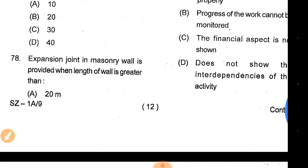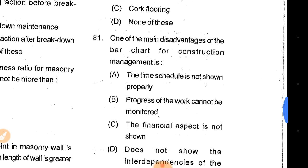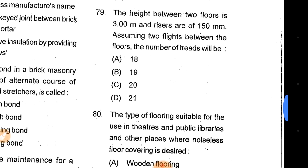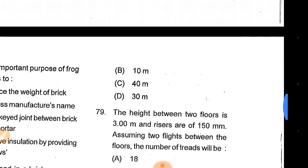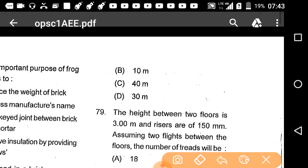Question 78: An expansion joint in a masonry wall is provided when the length of the wall is greater than 20 metres, 10 metres, 40 metres, or 30 metres. The correct answer is 40 metres.